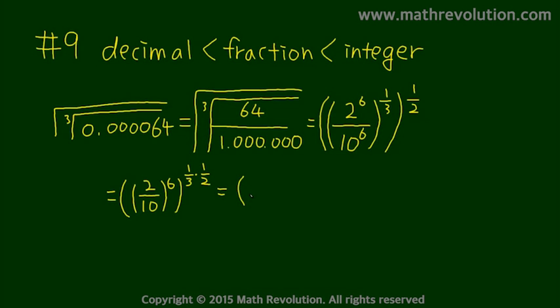And this becomes 2 over 10 to the power of 6 times 1 sixth, so our final value is 2 over 10 which is 0.2. And our answer is 0.2. Now we need to remember that fractions are easier to calculate than decimals.